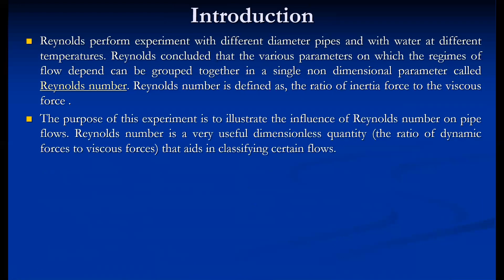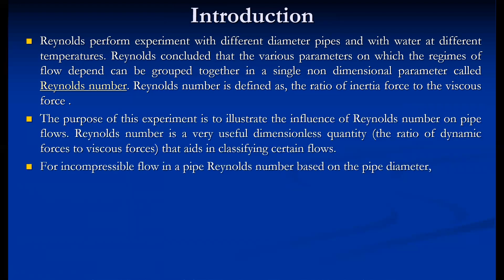The purpose of this experiment is to illustrate the influence of Reynolds number on pipe flows. Reynolds number is a very useful dimensionless quantity — the ratio of dynamic force to viscous force — that aids in classifying certain types of flow. For incompressible flow in a pipe, Reynolds number based on pipe diameter is given by ρ·V·d / μ.